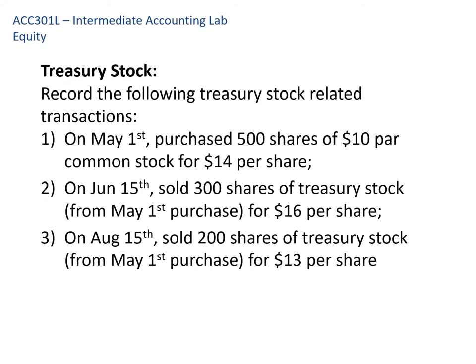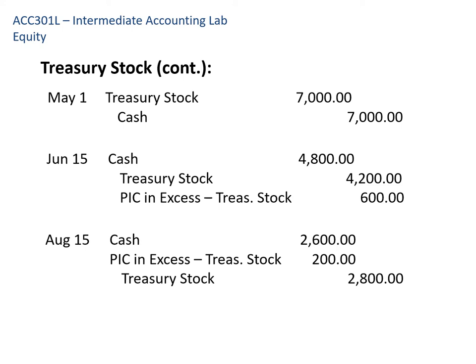The last set of transactions deals with treasury stock. We use the cost method, so we can forget about par — that's extraneous information in these problems. We debit treasury stock for the cost we paid for it. Remember, treasury stock is a contra account with a normal debit balance, which offsets the remainder of equity. Please go ahead and record these three transactions. In the first transaction, we purchased 500 shares of $10 par common stock at $14 per share — par value is extraneous — so 500 shares times $14 means we debit treasury stock for $7,000 and credit cash for that amount.